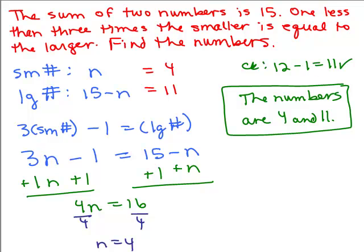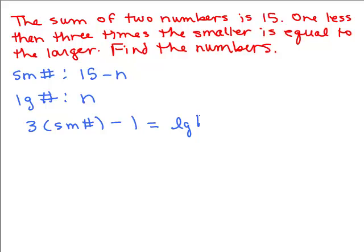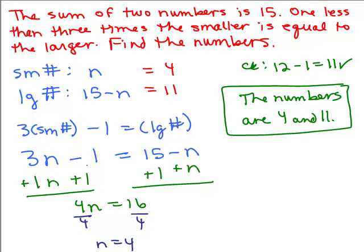That's one way to solve this problem. Now we're going to do it again using a different method. This first time I solved it, I let the small number be n. Let's do it a different way — this time, let's let the large number be n. Then the small number would be 15 minus n, so that these two numbers add up to 15. It says 1 less than 3 times the smaller, so 3 times the small number minus 1 equals the large number. This time we plug in 15 minus n for the small number — make sure you use your parentheses — and that equals n, the large number. Notice you get a really different equation than the first way.